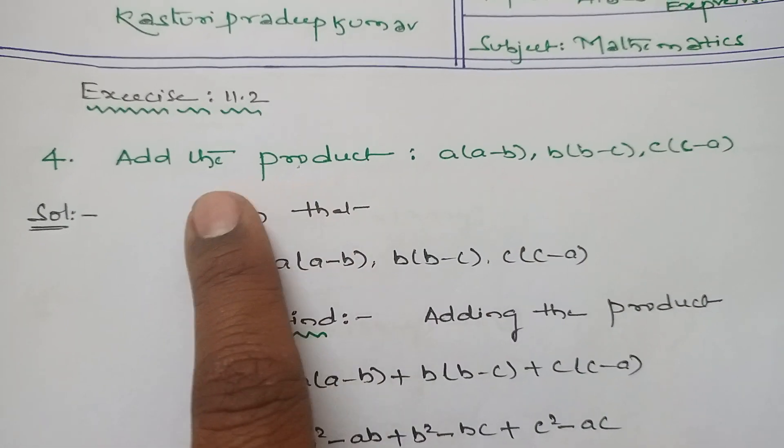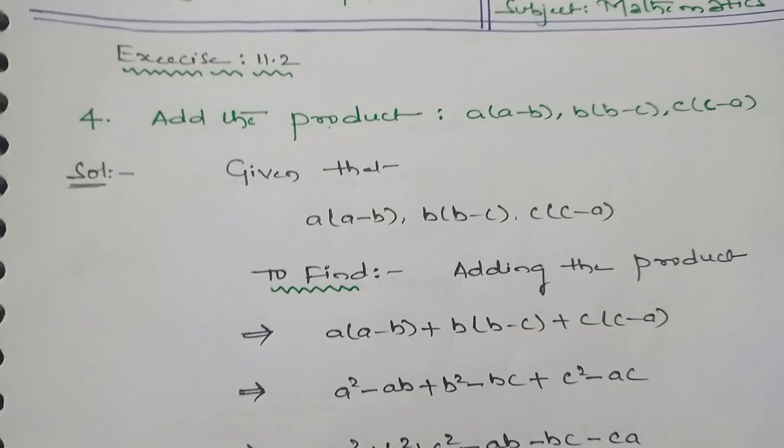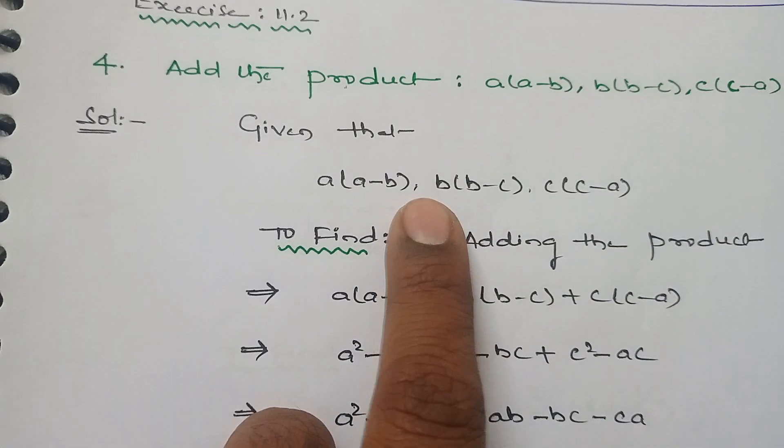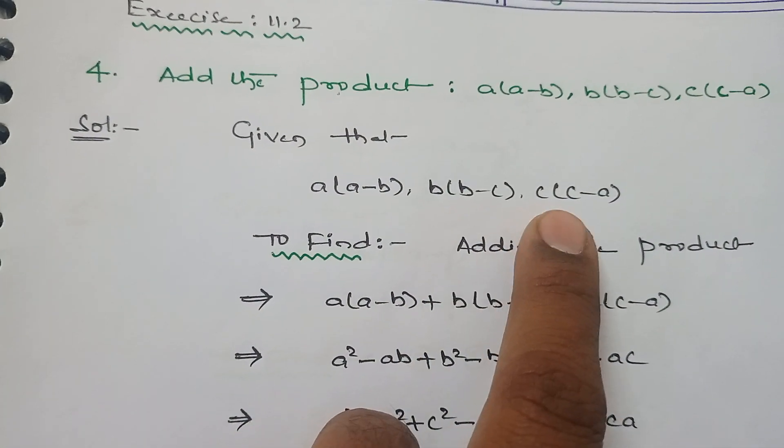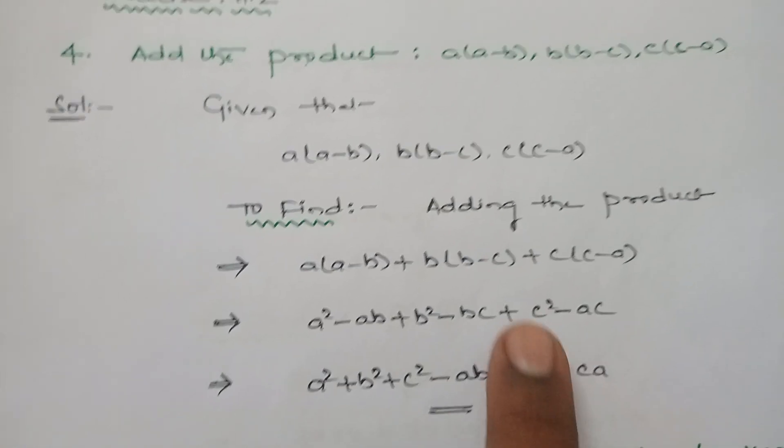Given that a(a-b), b(b-c), c(c-a), we need to add the product. So in place of comma we keep plus. Adding the product together, keep plus in between.